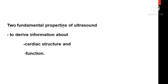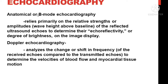There are two fundamental properties of the echo probe: one is to look for the cardiac structure, and the other is to look for cardiac function — that means contractility. The basics of the echo probe will cover anatomical 2D mode or B-mode echocardiography, and the more advanced component is the Doppler.